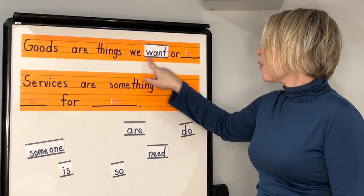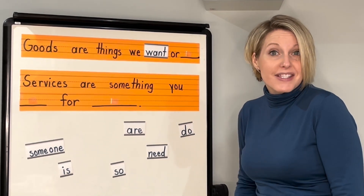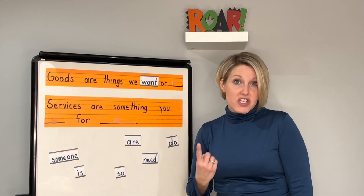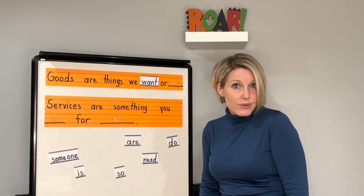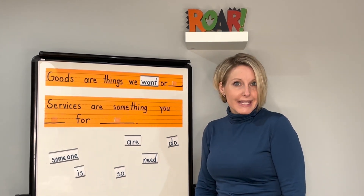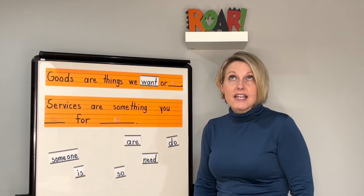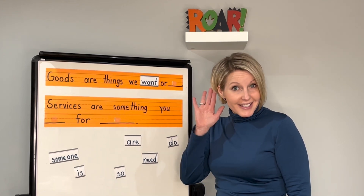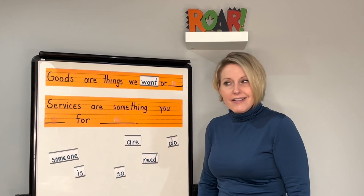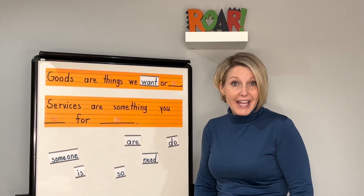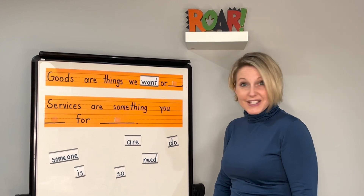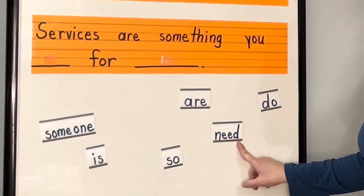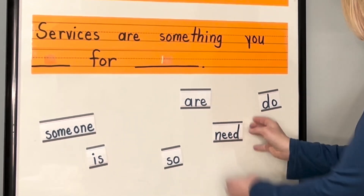Let's take the word want and put it in our first blank. Goods are things we want or need. Need is our second word. Let's think about the sounds in need. Can you stretch it out with me? N-e-d. There are three sounds in need. What's the beginning sound in the word need? Need — nn. What letter makes the N sound? Did you say N? That's right. Point to a word that begins with the letter N. Do you see it? That's right, there's the word need. N-e-d. Let's put need in the next blank.